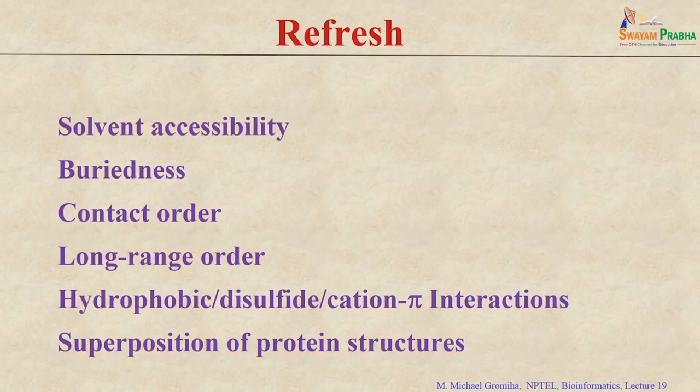In the previous class, we discussed about various parameters or properties which can be derived from protein 3D structure. These include contact maps, solvent accessibility, buriedness, solvent accessibility reduction ratio, transfer free energy, contact order, long-range order, and multiple contact index. Other parameters include hydrophobicity and interaction potentials between residues, such as hydrophobic, cation-pi, and electrostatic interactions.